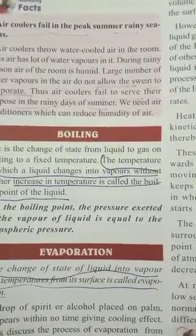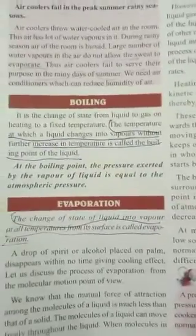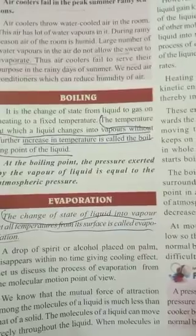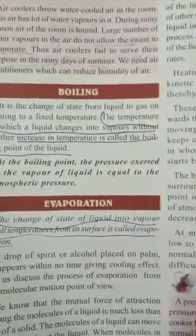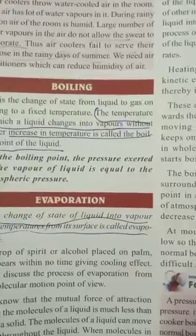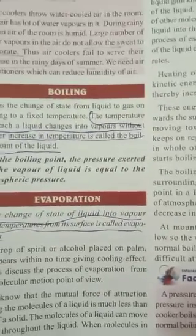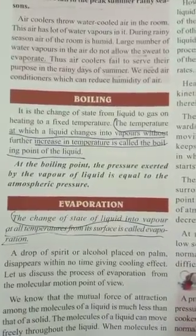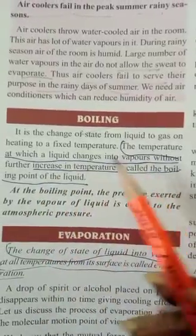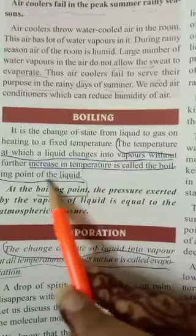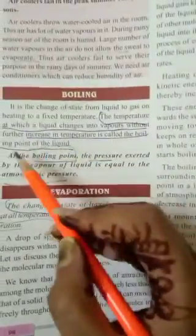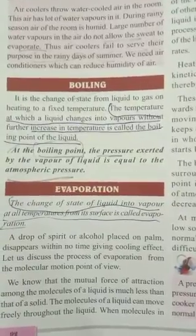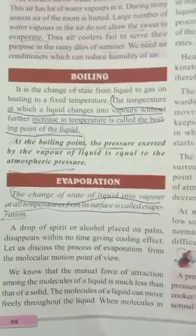Boiling means a liquid converts into gaseous form at a particular fixed temperature. Evaporation, on the other hand, occurs when liquid converts at any temperature from its surface. So evaporation is a surface phenomenon — from the surface, the water evaporates into the air. At the boiling point, the pressure created inside the liquid is equal to the atmospheric pressure.